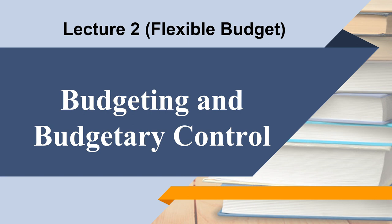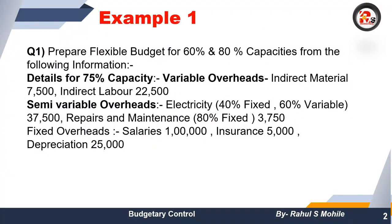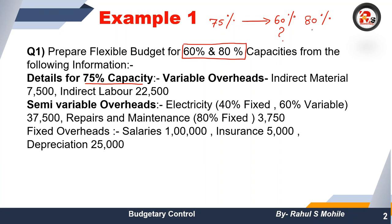Let us start with the question. First of all, read the question carefully. Example one: prepare a flexible budget for 60% and 80% capacity. First check how many percent capacity the budget is to be made for. We have been given details for 75% capacity, and on the basis of 75% capacity we need to find out what the expenses will be if the company works at 60% capacity and at 80% capacity.